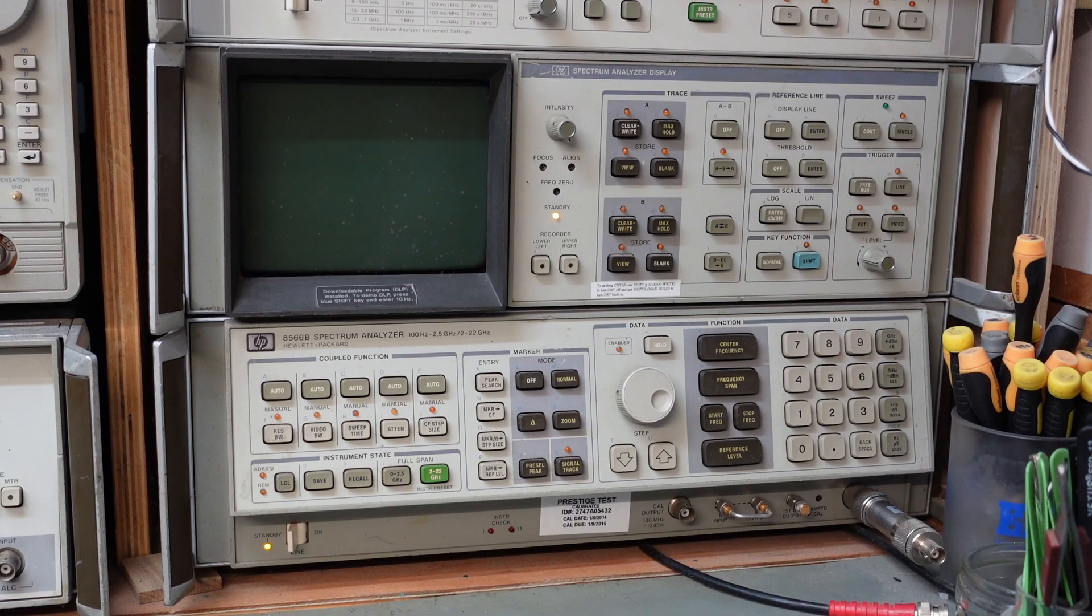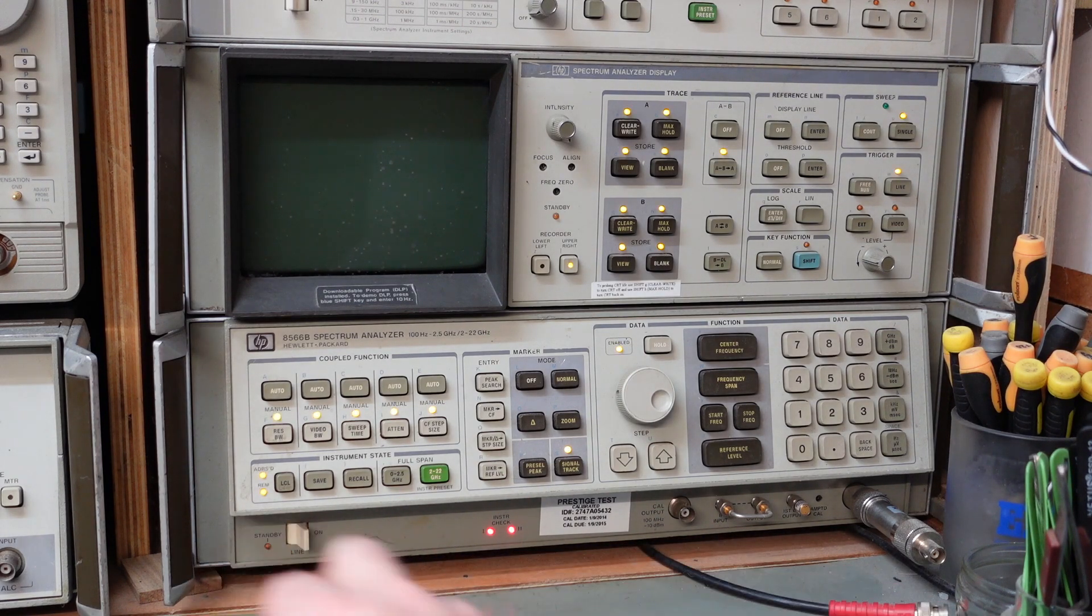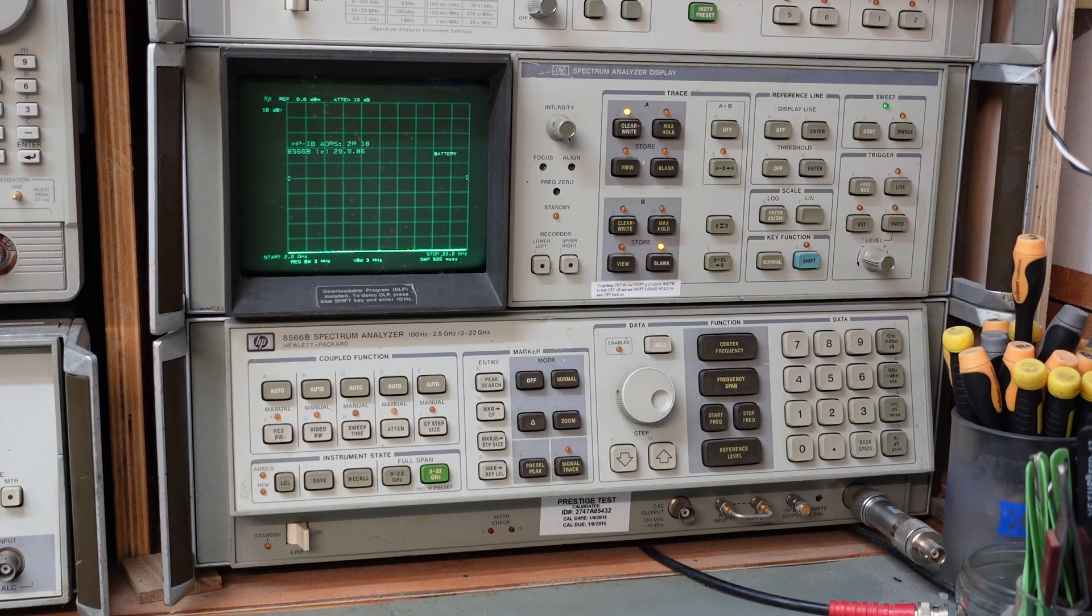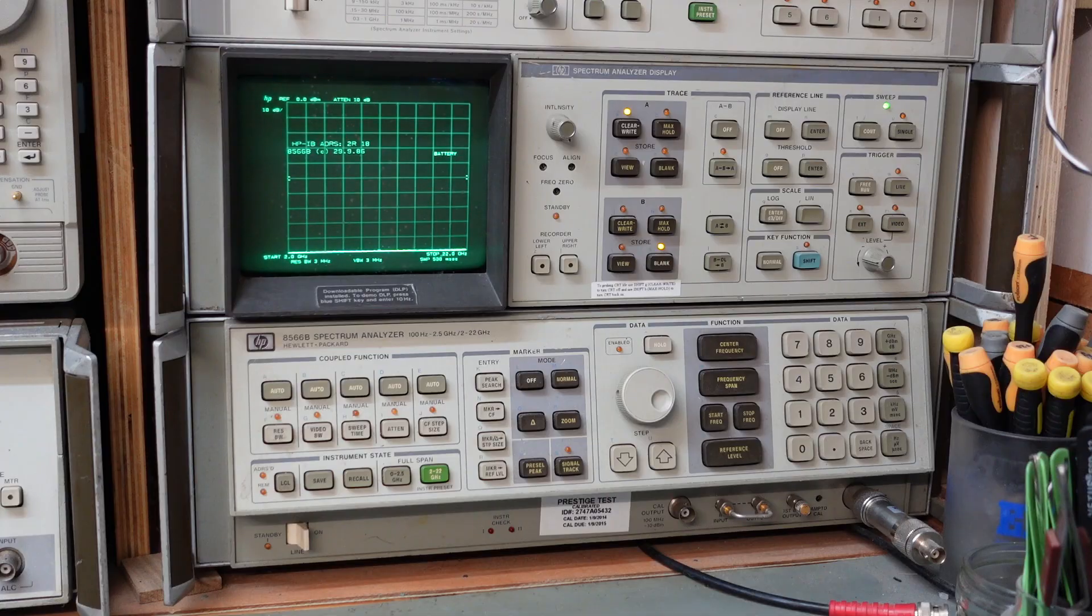And the spectrum analyzer is an HP 8566B. This is an absolute beast. This thing will measure from 100 hertz to 22 gigahertz. It's got a very good dynamic range, shall we say.